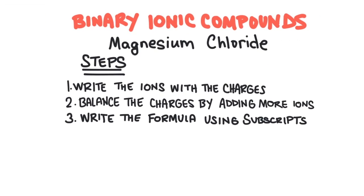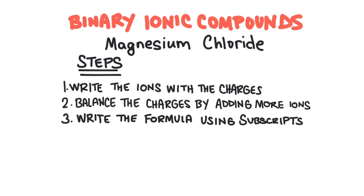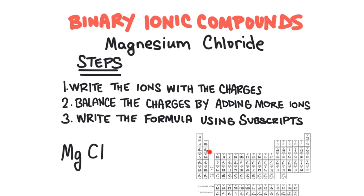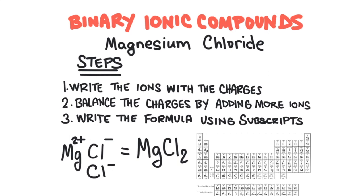How about going the other way, from a name to a formula? First, write the symbol for the ions with the charges. Magnesium is in group 2, so it has a 2+ charge. Chloride is actually chlorine, in group 7 — everything in group 7 will have a minus 1 charge. Next, we need to balance the charges by adding more ions. The total positive charge is 2+, and the total negative charge is minus 1. So I can add another chloride to make the total negative charge 2 minus, because there are two chlorides now. We can write the formula indicating the number of each element with a subscript — no need to include the subscript 1 if there's only one of that element. There's only one magnesium and two chlorides, so the formula is MgCl2.